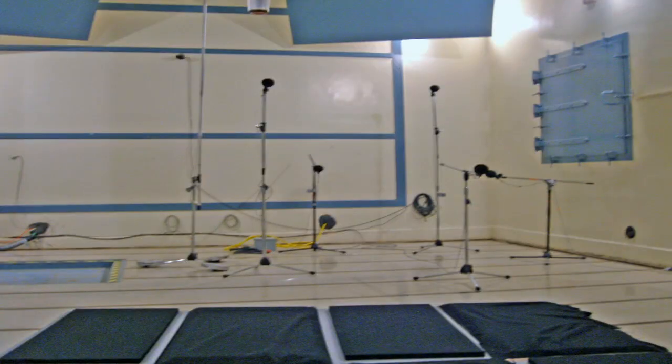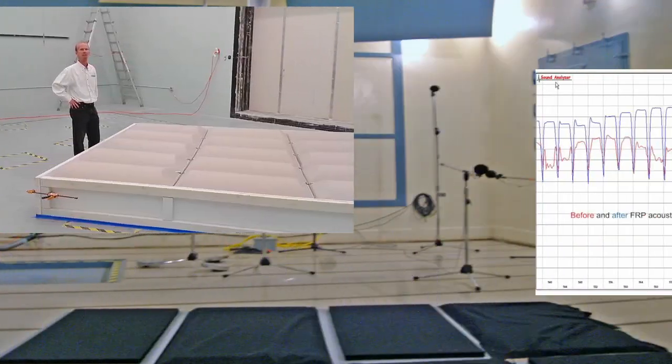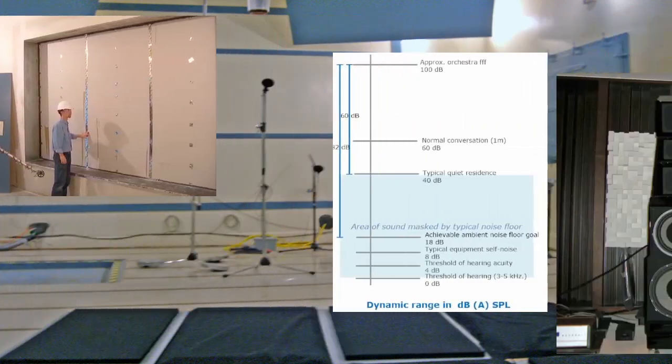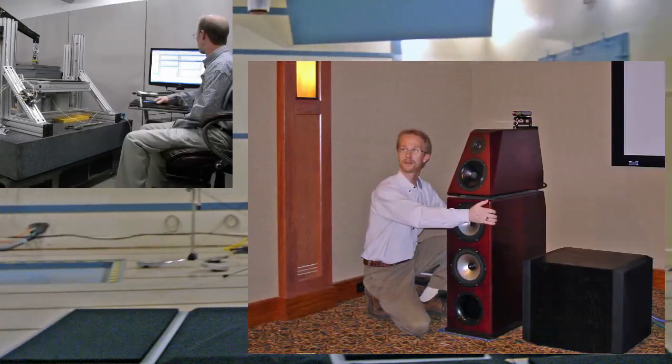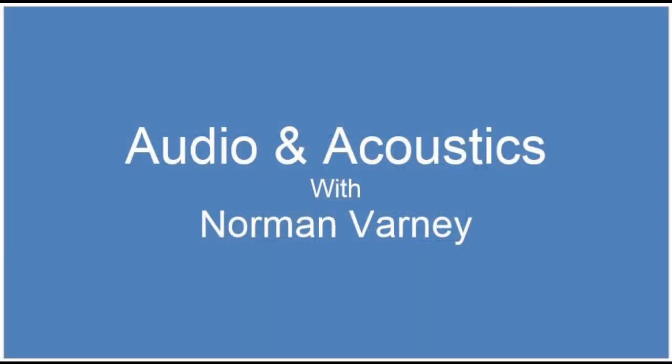I'm Norman Varney with AV Room Service. Today we're going to be talking about room mode solutions. In the last segment we talked about room modes, the problems, and how room modes are nonlinear frequency responses in the bass region — frequencies below 300 Hz. These are long waves, many feet, even yards long, and they create a droning, muddy, inarticulate sound quality in your stereo system.